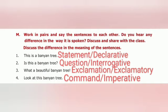Exercise M: Work in pairs and say the sentences to each other. Do you hear any difference in the way it is spoken? Discuss the difference in the meaning of the sentences. First one: 'This is a banyan tree.' — answer: statement or declarative sentence. Second one: 'Is this a banyan tree?' — answer: question or interrogative sentence. Third one: 'What a beautiful banyan tree!' — answer: exclamation or exclamatory sentence. Fourth one: 'Look at this banyan tree.' — answer: command or imperative sentence.